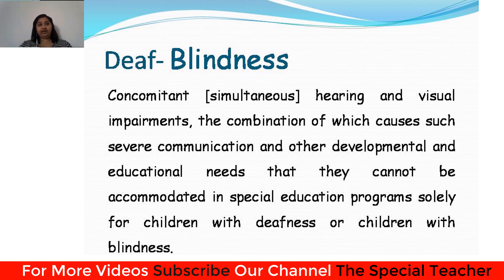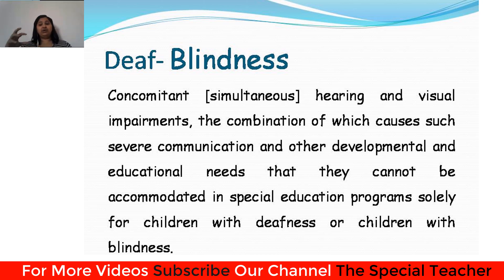Deafblindness can also occur in later childhood or during adulthood due to causes such as meningitis, brain injury, or any inherited condition. It is mainly categorized as congenital deafblindness — present from birth — and acquired deafblindness, which occurs later in life due to aging, accident, or other causes. For congenital deafblindness, children are trained from a smaller age using sign language and Braille learning.